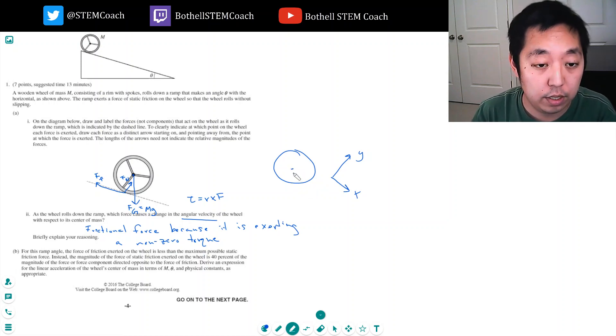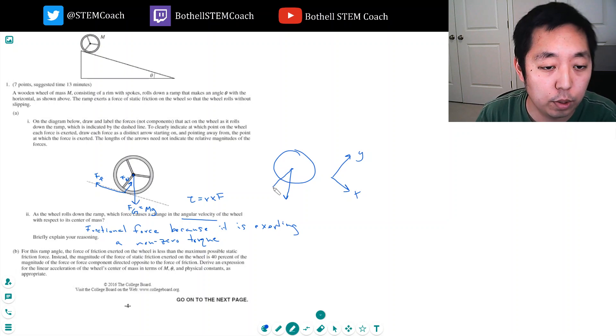I got, I have mg, but that's really broken into two components. If this is the ramp and the theta is here, in the x direction is mg or capital mg sine theta, and the y direction is mg cosine theta.